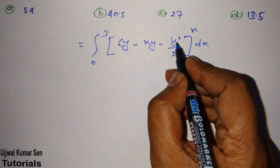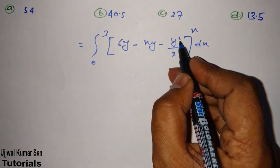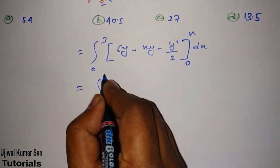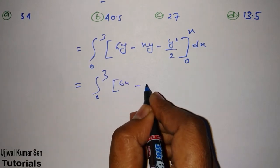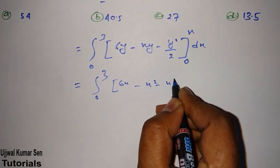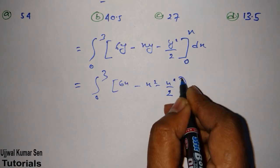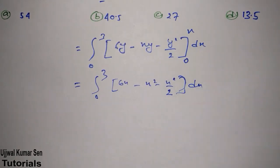We have to put in place of y that is x. So let's do it: 0 to 3, 6x, x square, x square by 2 and it's dx. Now again what we have to do? We have to do integration.